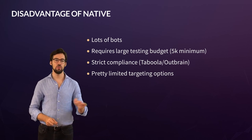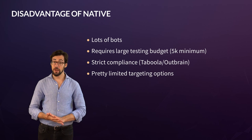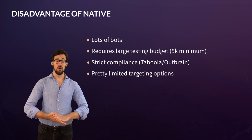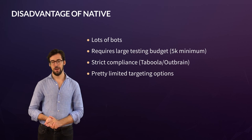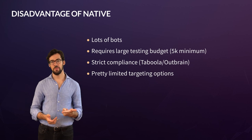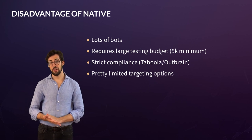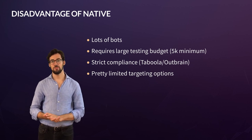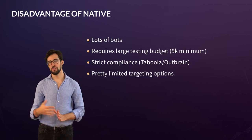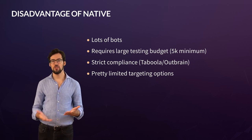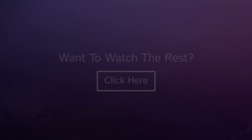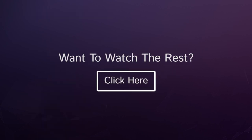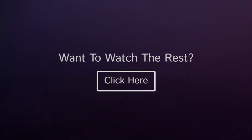In comparison to display or pops, the targeting on native is pretty good. You have the usual options like device and country, but you can also target by topic on Rev Content — things like health and fitness or conservative news — which is definitely useful to some degree, but nothing like Facebook or Google. So basically, the top networks are Taboola, Outbrain, Rev Content, and Content.ad.